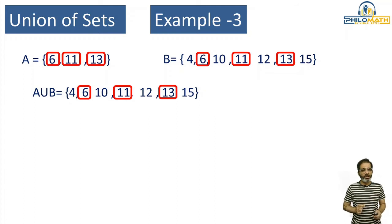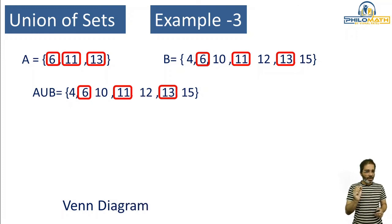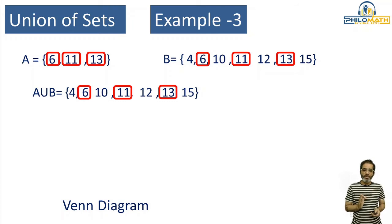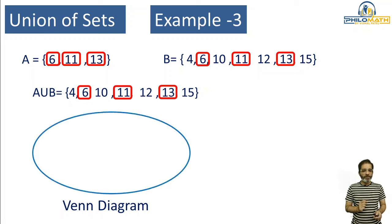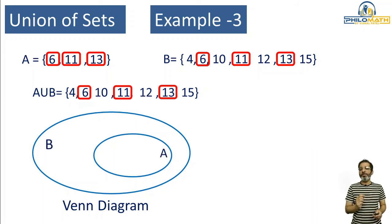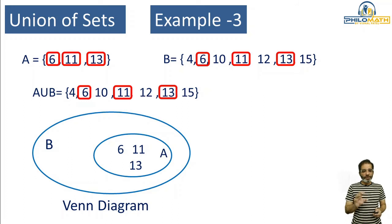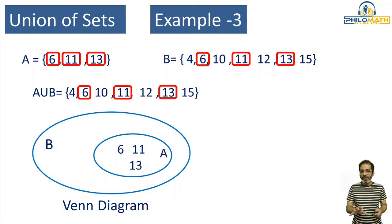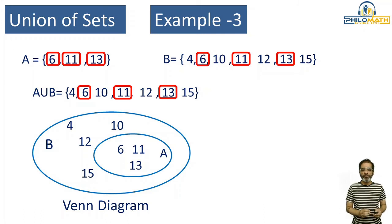Now understand how we draw the Venn diagram for this — this example is very important. Since all elements of Set A are inside Set B, I draw two figures inside each other. The outer one I name B and the inner one I name A, because Set A is inside Set B. Inside A I write 6, 11, 13 — which are elements of Set A and also part of Set B. Outside A but inside B, I write the remaining numbers: 4, 10, 12, and 15. Since we are finding union I shade everything.